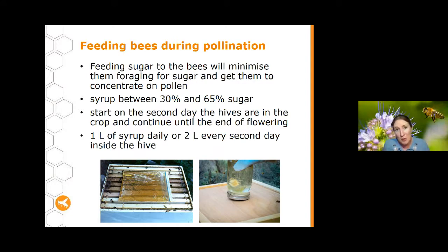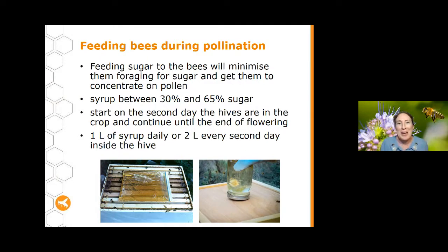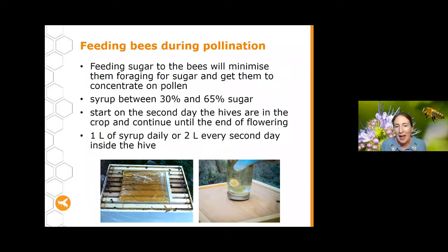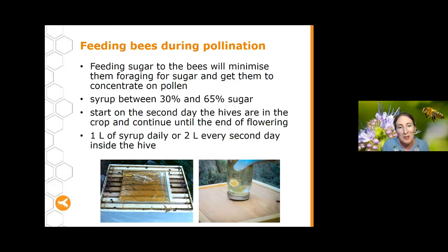Feeding bees during pollination can be really important — both to keep up the health of your bees and to prevent them straying off to other crops to forage nectar rather than doing their job of pollinating. Feeding sugar to bees will minimise their foraging for sugar and make them concentrate on pollen. Use sugar syrup between 30 and 65% sugar concentration. Start on the second day the hives are put in the crop and continue right through to the end of flowering — generally around one litre of syrup daily or two litres every second day, fed inside the hive.